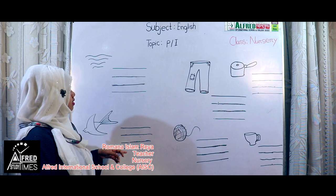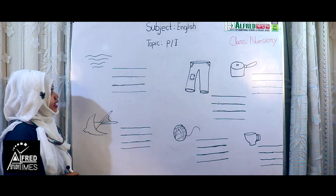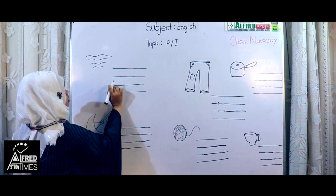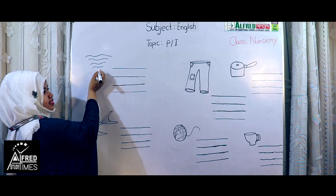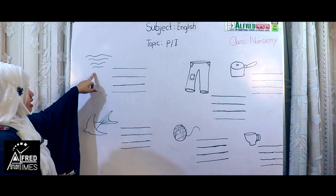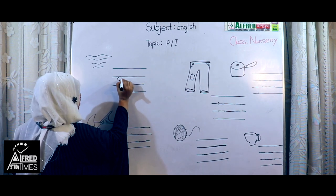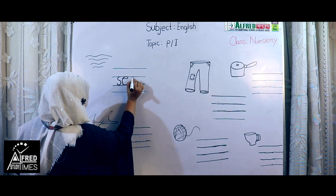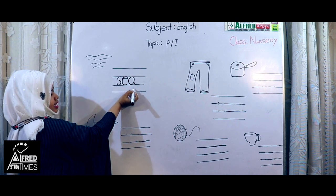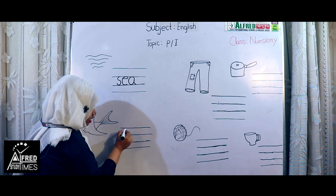Today we learn this picture's name and how to write. Okay, what is this? This picture's name is C. C is spelling S-E-A-C. Okay, next.